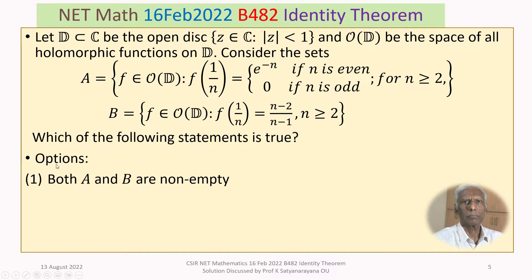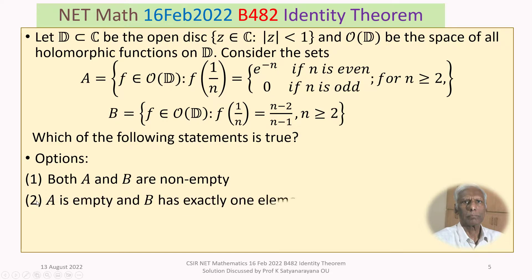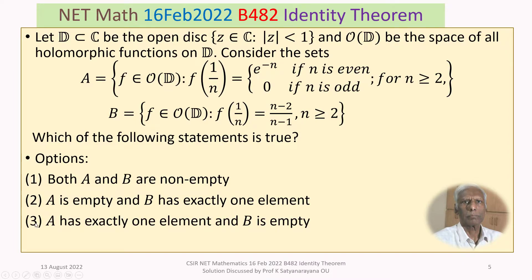We are given four options. Option 1: both A and B are non-empty. Option 2: A is empty and B has exactly one element. Option 3: A has exactly one element and B is empty. Option 4: both A and B are empty.